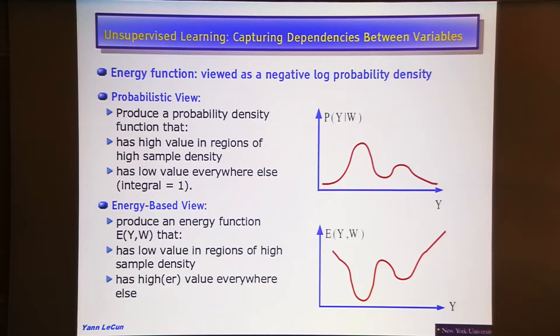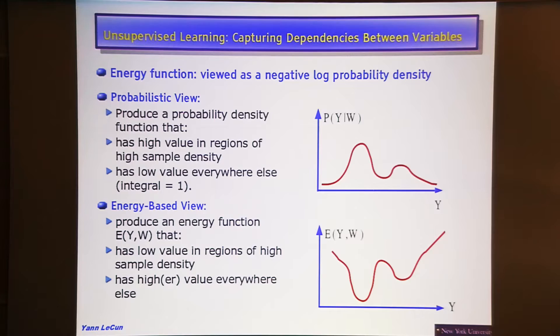For example, consider a number three distorted in all possible ways — it forms a manifold in pixel space. If you had a box that told you whether you're on the manifold of threes or not, you'd have a three-classifier. If the box simply tells you 'this looks like a digit, I don't know what type,' that's still useful. In weak form, you just need a contrast function that's low on the manifold and high everywhere else.